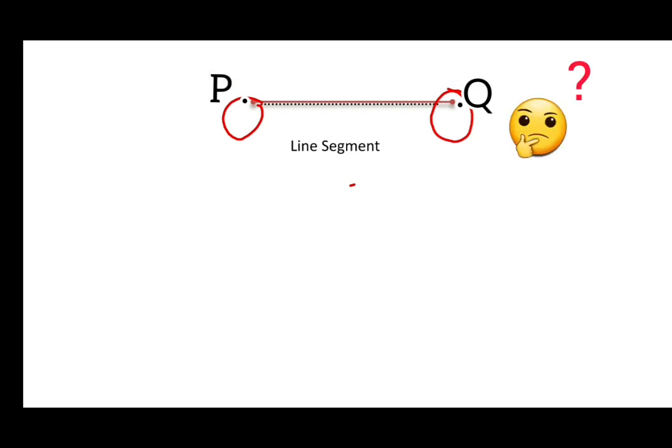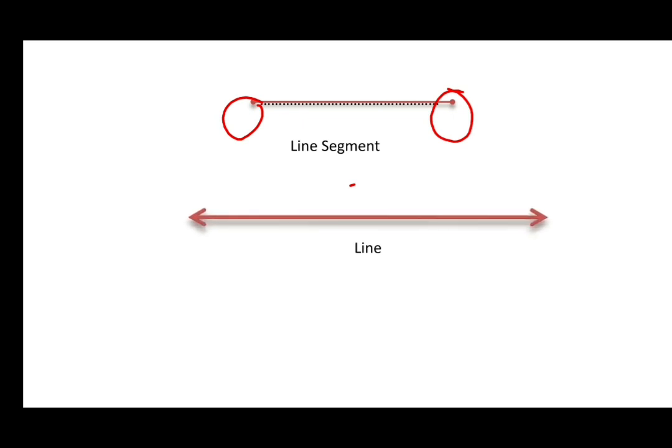But if this is a line segment, then what is the line? Can you see this figure? Very special property of a line is that it extends unendingly on both the sides.